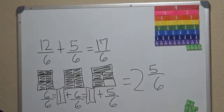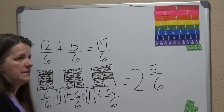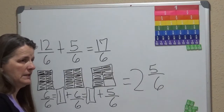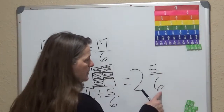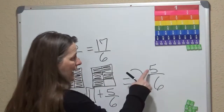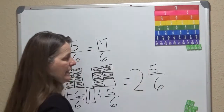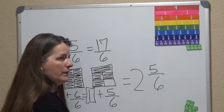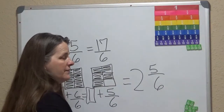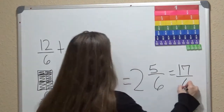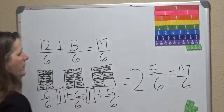I always tell my students you can double-check yourself to see if you're correct. Multiply the denominator 6 times the whole number 2, which gives you 12, and then add 5. So 6 times 2 is 12, and 12 plus 5 gives you 17. So that's 17 sixths — therefore you know that you're correct.